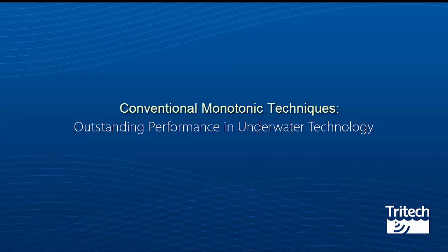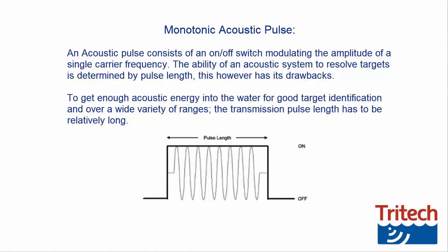To understand the benefits of using CHIRP techniques, we need to analyse the limitations of using conventional monotonic techniques. An acoustic pulse consists of an on-off switch modulating the amplitude of a single carrier frequency. The ability of the acoustic system to resolve targets is determined by pulse length.